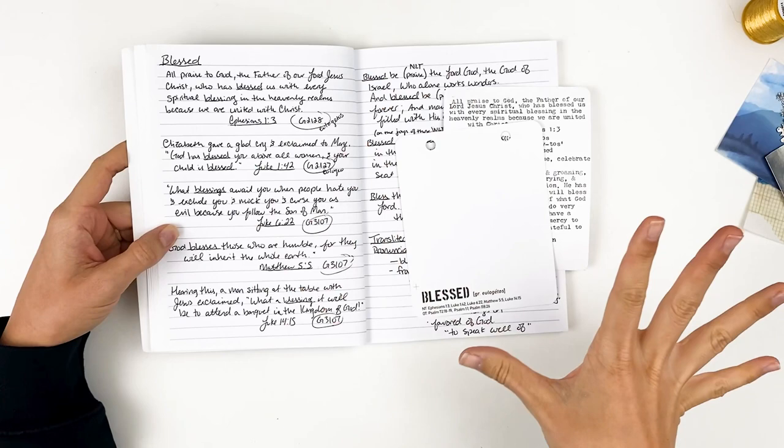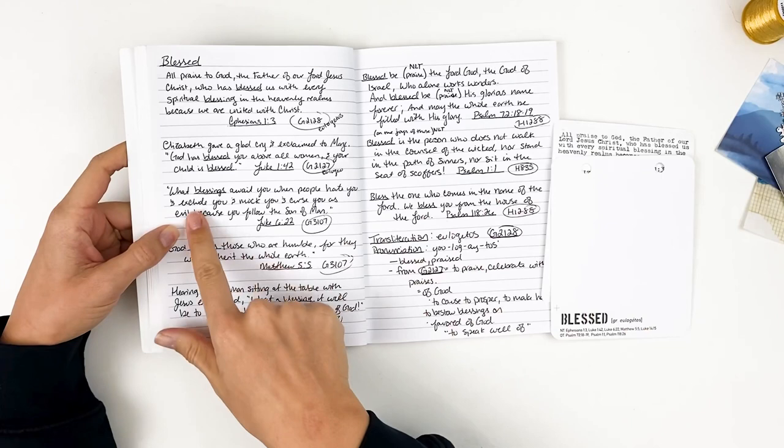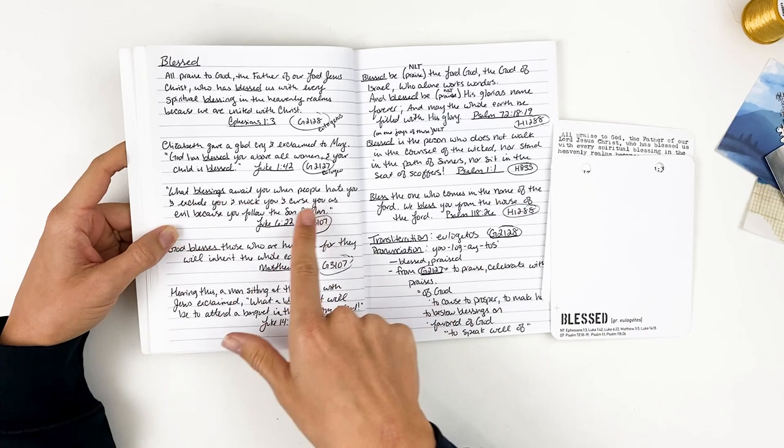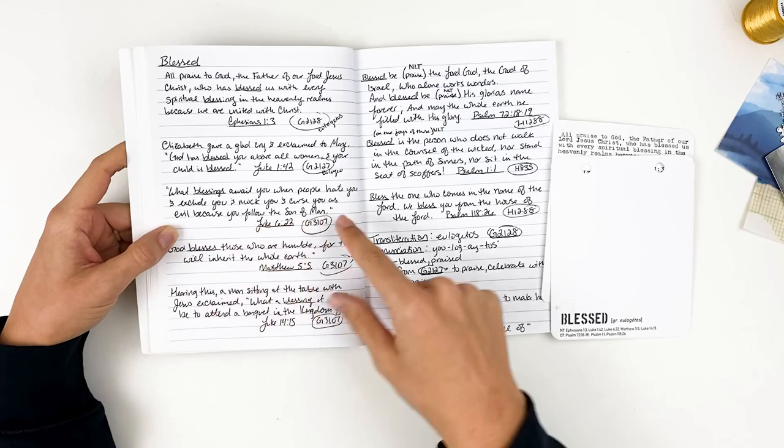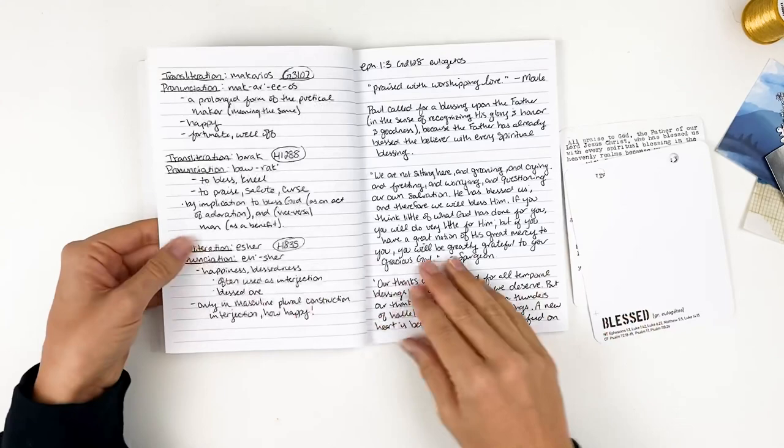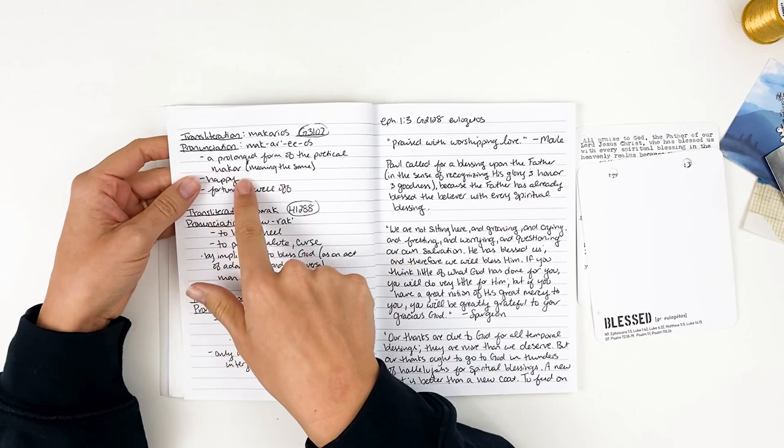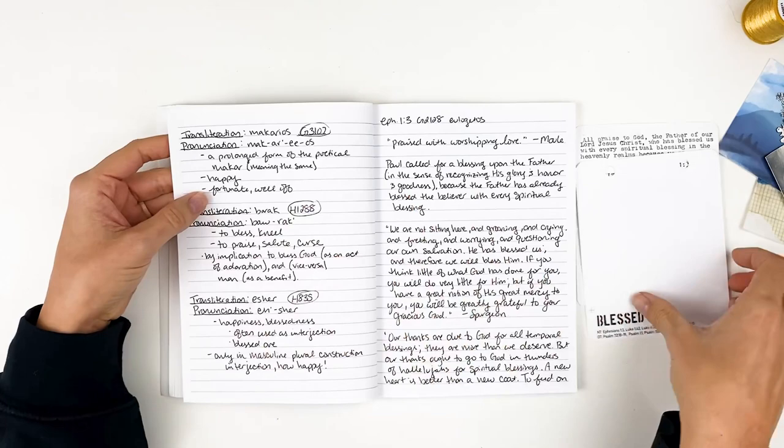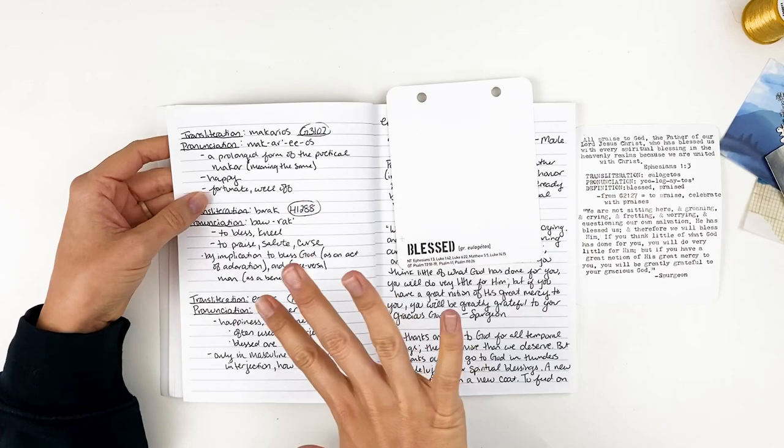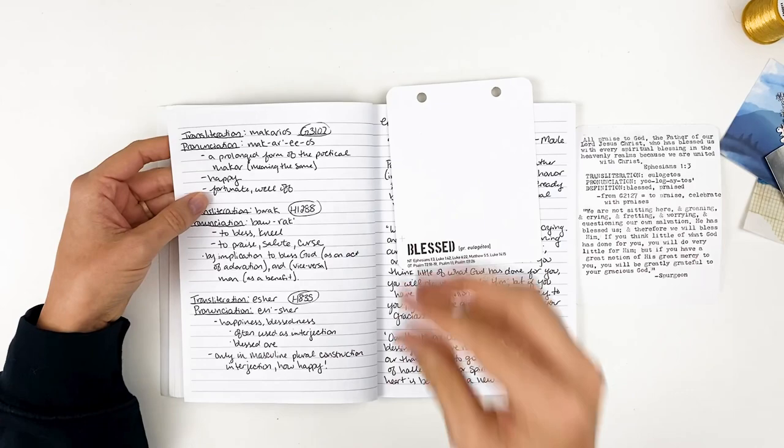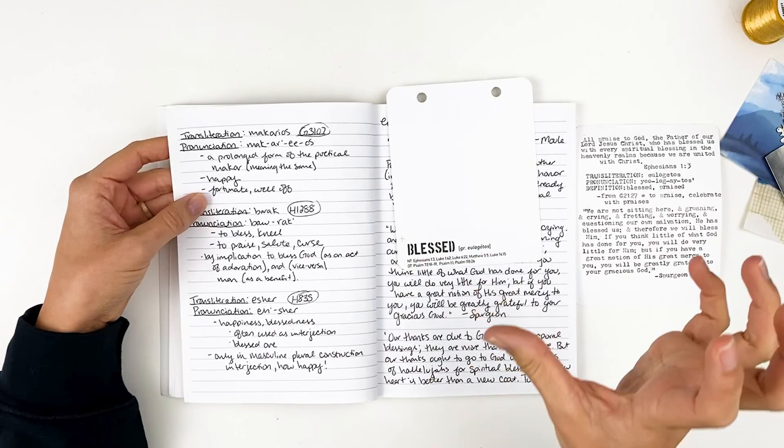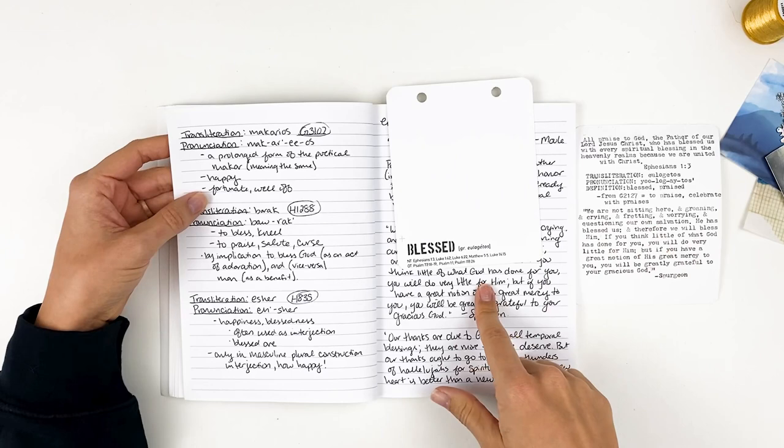So then as I went through the list of verses, I don't always write them all out. But this time I decided to do that because I came across a few different words. So Luke 6:22, what blessings await you when people hate you and exclude you and mock you and curse you as evil because you follow the Son of Man? Now this word for blessings is actually G3107, which is makarios, a prolonged form of the poetical word makar, meaning the same, happy, fortunate, well off.